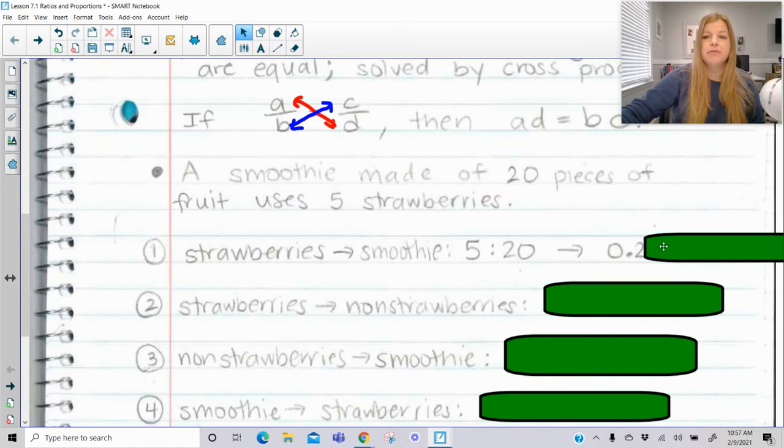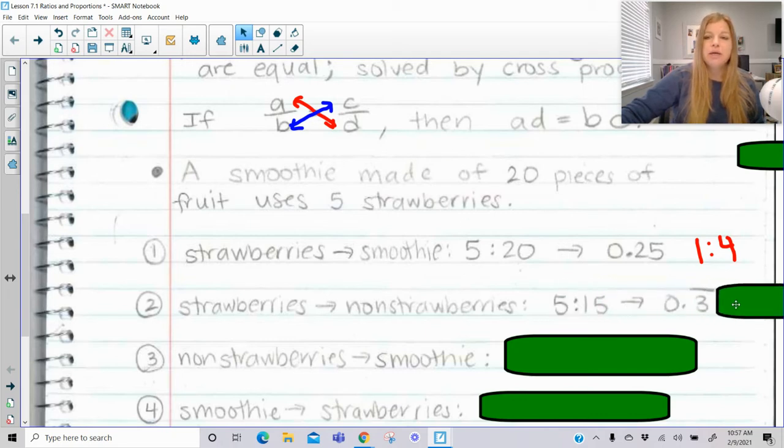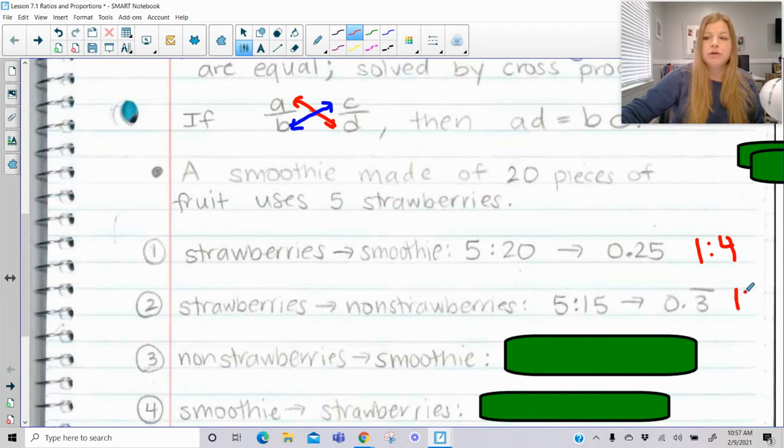5 to 20 can be simplified to 0.25 or 1 to 4. Either one is fine. You can write the ratio in either one of these ways, decimal or the simplified ratio version. Strawberries to non-strawberries: if there's 5 strawberries, that means there's 15 non-strawberries, which is 0.3 repeating, or in simplified ratio form, 1 to 3.